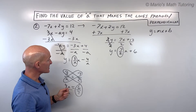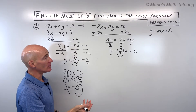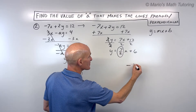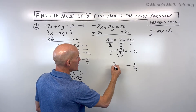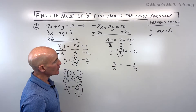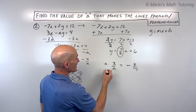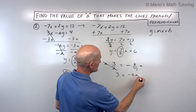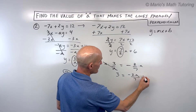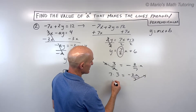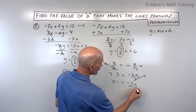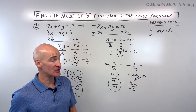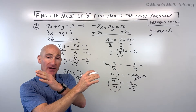For perpendicular lines, we need the opposite reciprocal of 7/2. Since 7/2 is positive, the opposite reciprocal is −2/7. We set 3/a = −2/7. Multiplying both sides by a gives 3 = −2a/7, then multiplying both sides by 7 gives 21 = −2a. Dividing both sides by −2, we get a = −21/2. That's the value of a that makes the lines perpendicular.